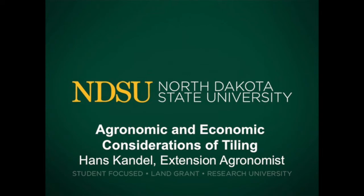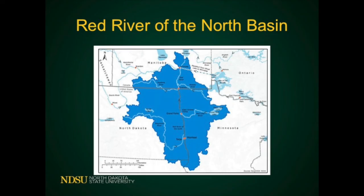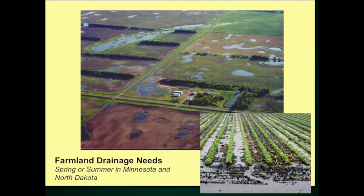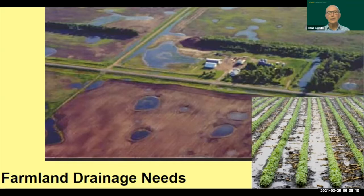I'm interested in agronomy and looking at the effects of tiling for that purpose. In our region, in the Red River Valley going all the way into Canada, we often have wet conditions, especially in the spring. And when we plant, we sometimes get rain events where we have saturated conditions.